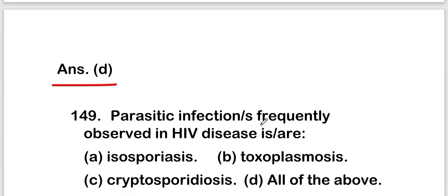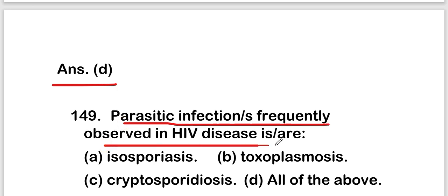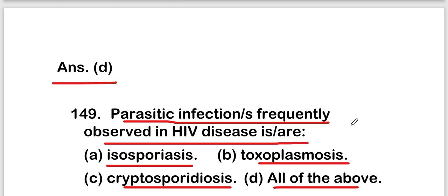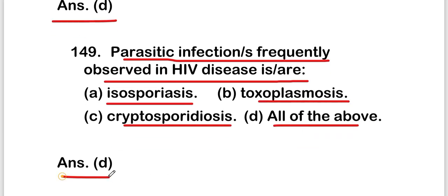The next question is: parasitic infections frequently observed in HIV disease are isosporiasis, toxoplasmosis, cryptosporidiosis, or all of the above? The right answer is option D, all of the above. All three are parasitic infections frequently observed in HIV disease.